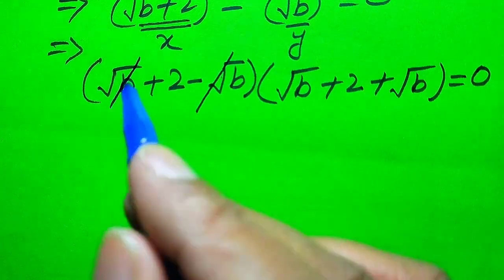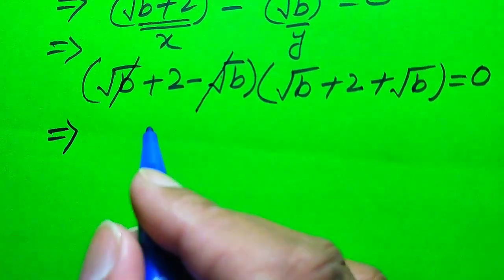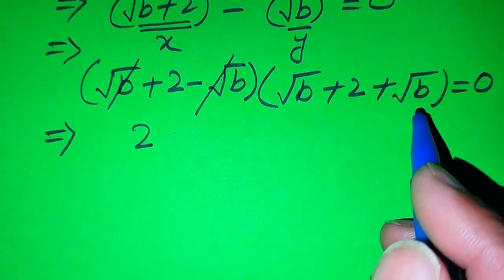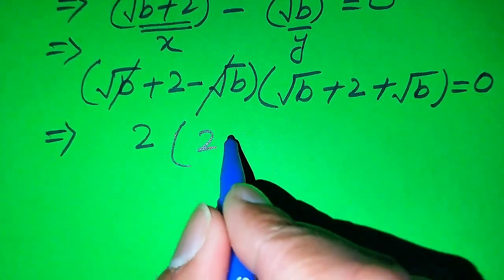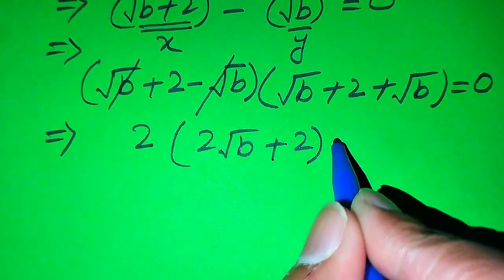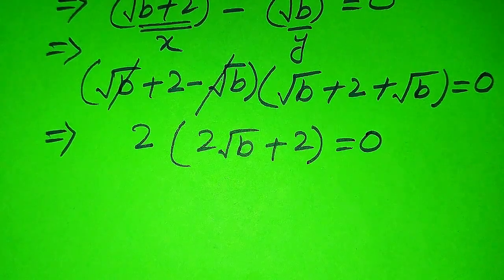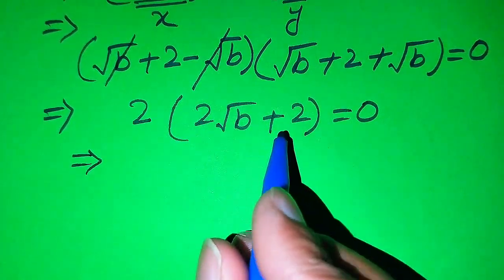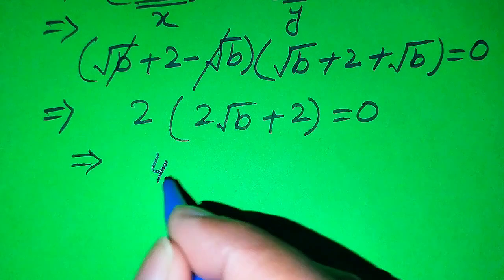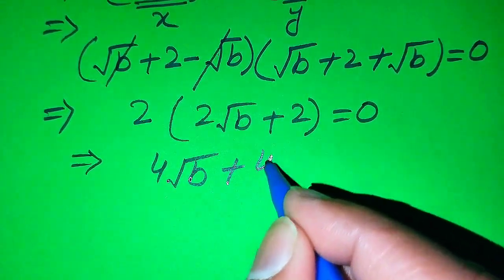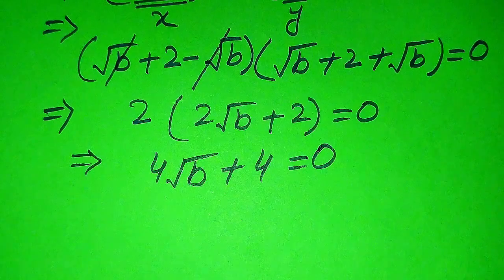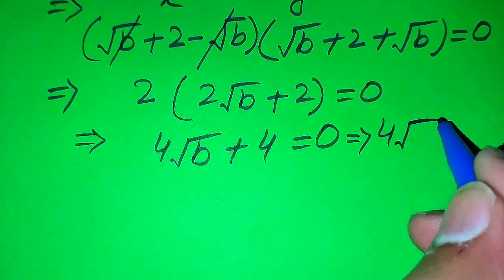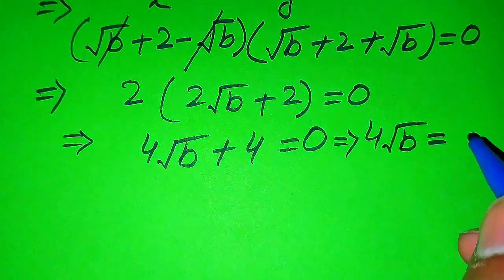The negative and positive √B terms in the first factor cancel, and in the second factor we sum them: √B + √B = 2√B, plus 2. So the equation becomes: 2 × (2√B + 2) = 0. Expanding: 4√B + 4 = 0. Moving +4 to the right-hand side gives us: 4√B = -4.